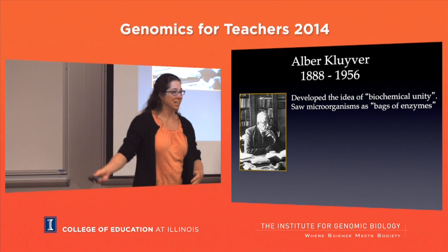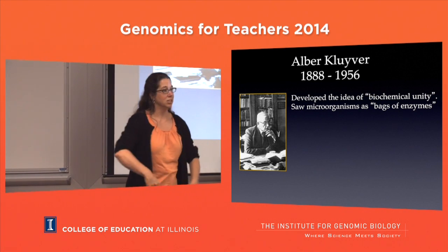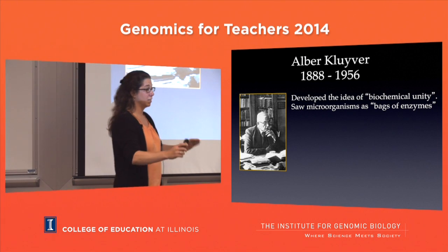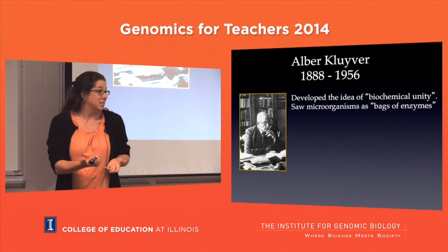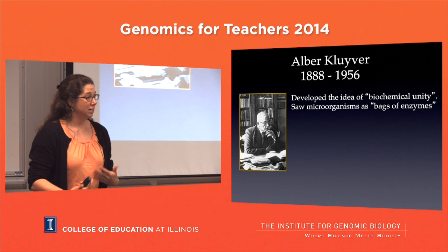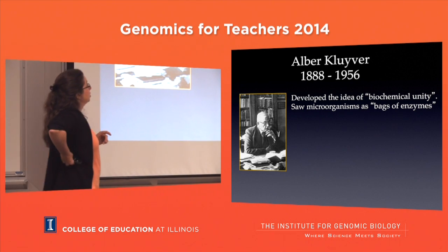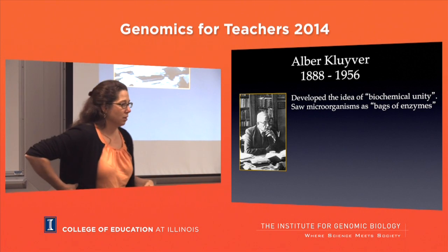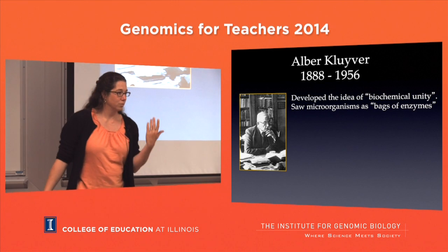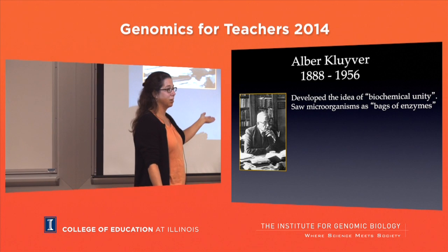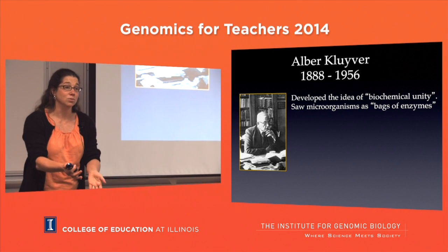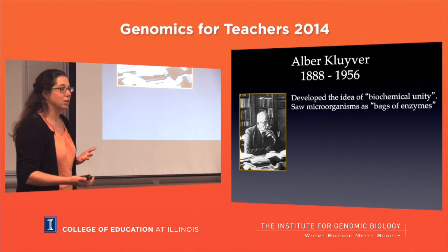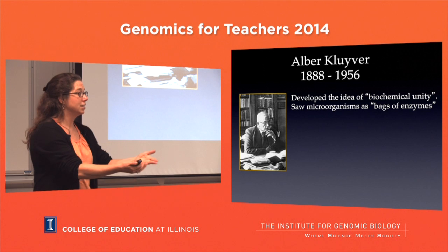Around this time, microbiology took a turn that I think is for the worse, in that people decided they didn't really care what microbes were evolutionarily. They really wanted to understand how they work. So a lot of microbiology went towards using microorganisms as cells to study. They started doing genetic manipulations in laboratories. Kluyver took it in this direction by noticing that the way they work is a lot like the way we work - replication, the central dogma of DNA to RNA to proteins. He noticed this biochemical unity and didn't care so much about how they were different from each other - they're just these bags of enzymes we can use.